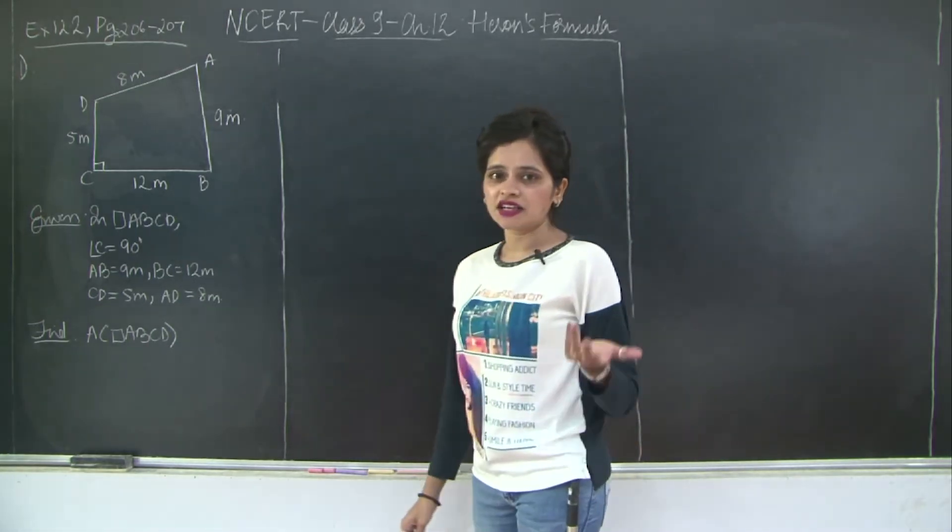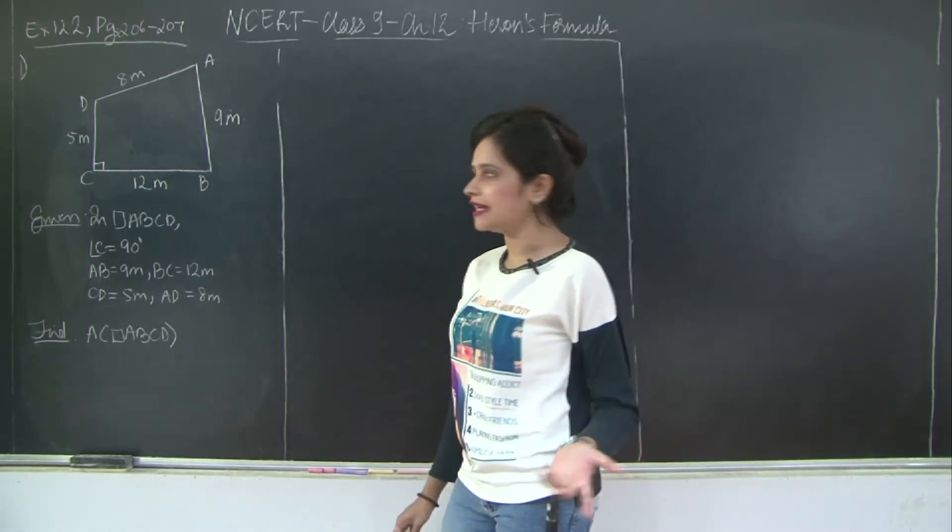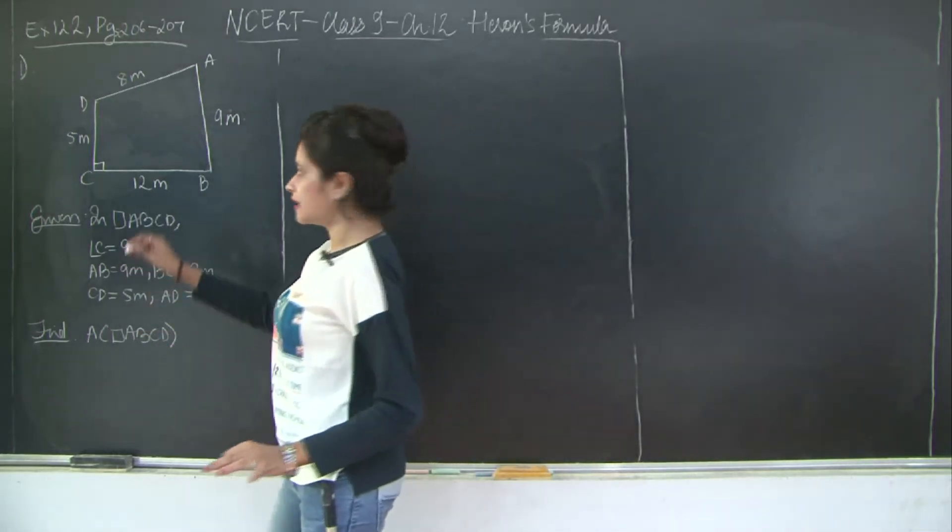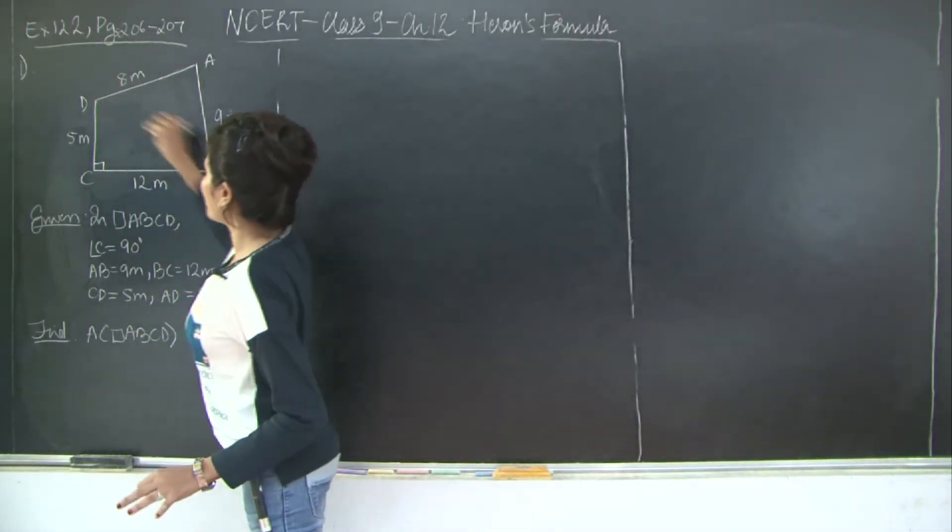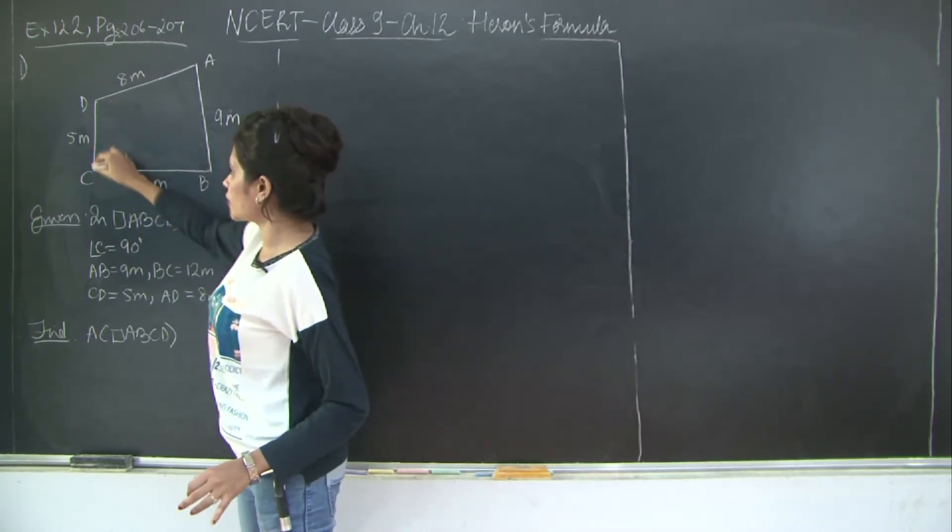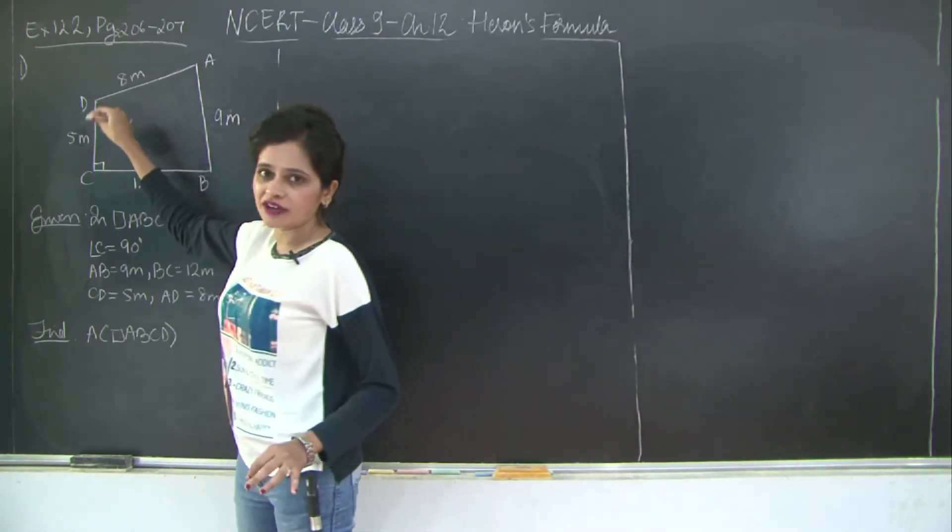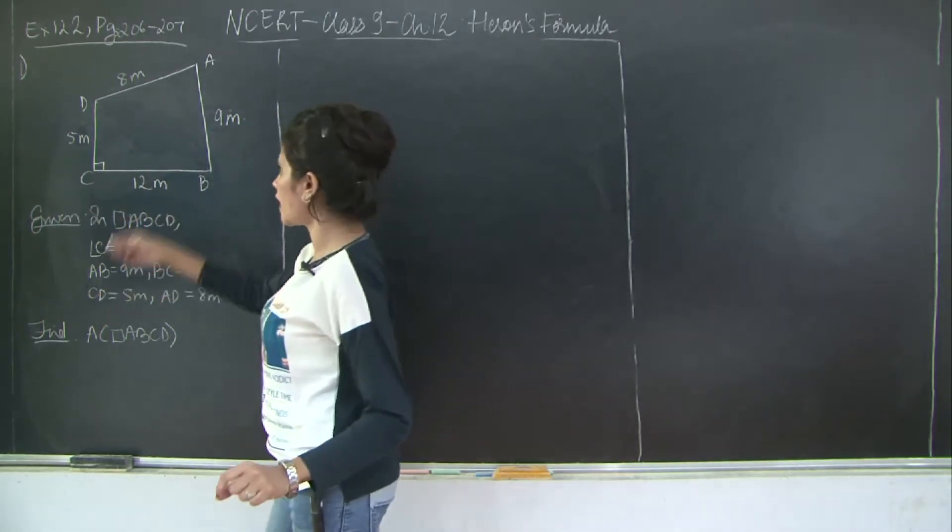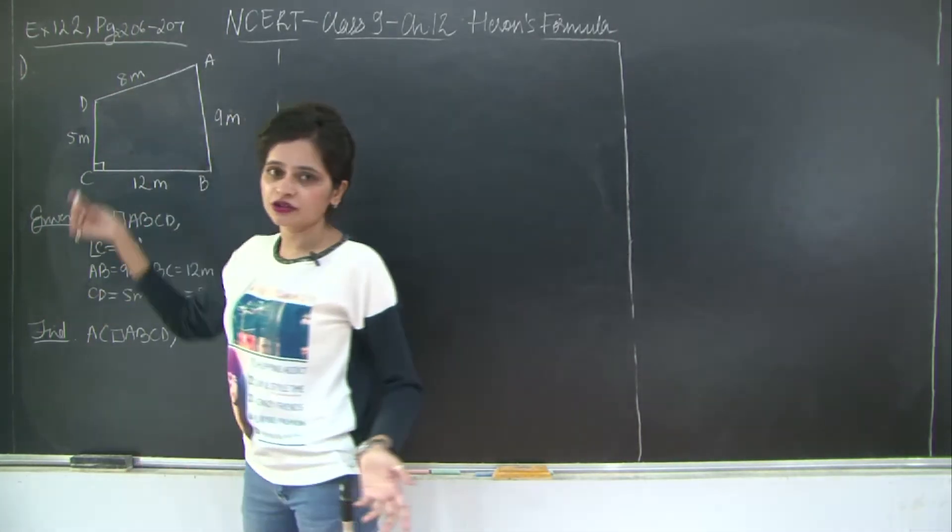So how do we split the quadrilateral? By just joining any diagonal. In this case, it would be feasible to draw diagonal BD because you will get a right angle triangle here. So the right angle triangle CBD, you can find the area using half into base into height and ABD you can find through Heron's formula.